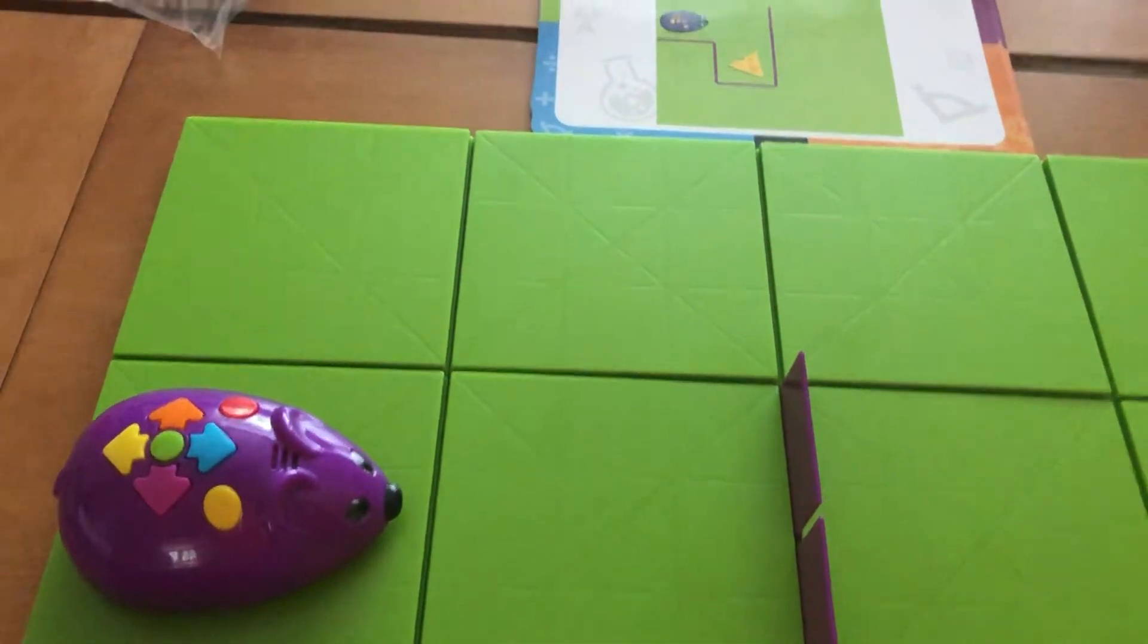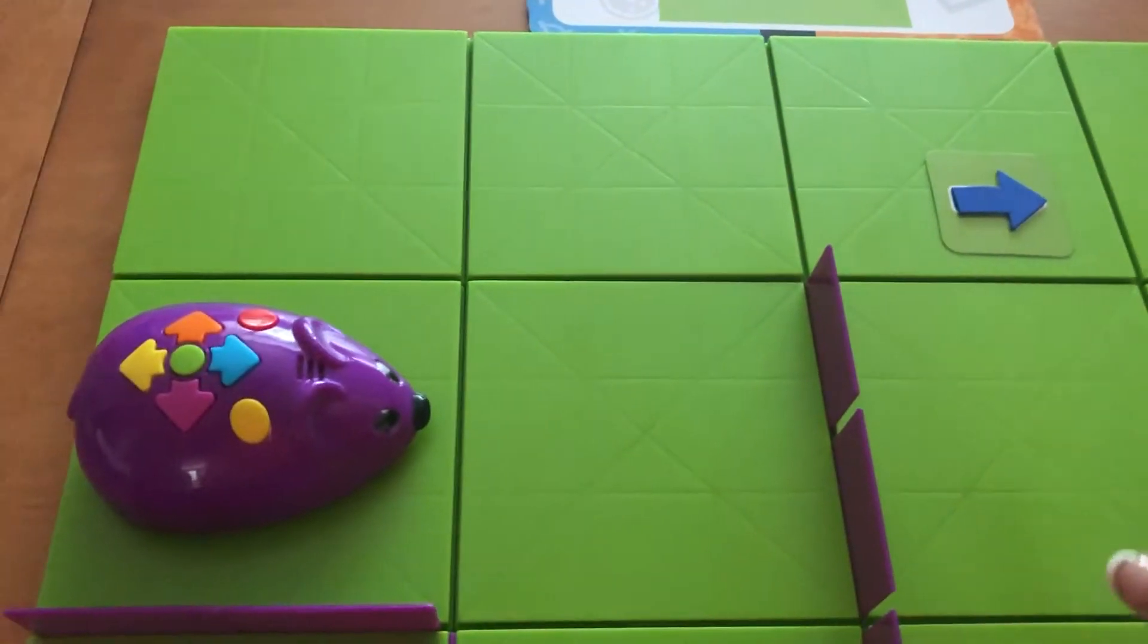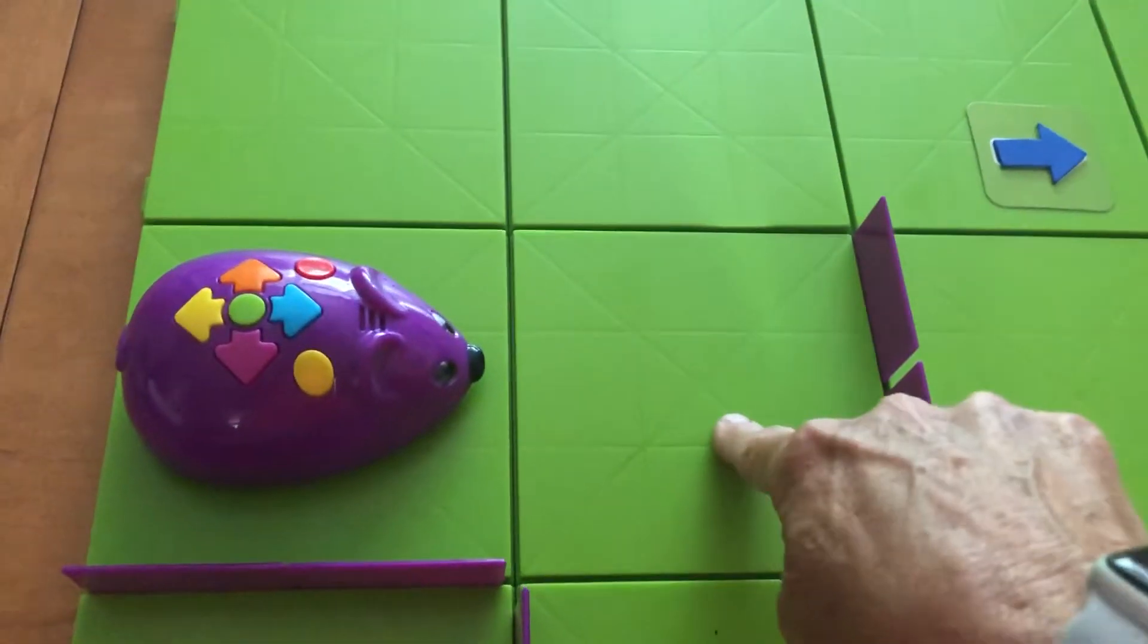So I'm going to take one of my arrow cards, and I'm going to make my code here on the right-hand side so you can see it. His first move is going to be straight.